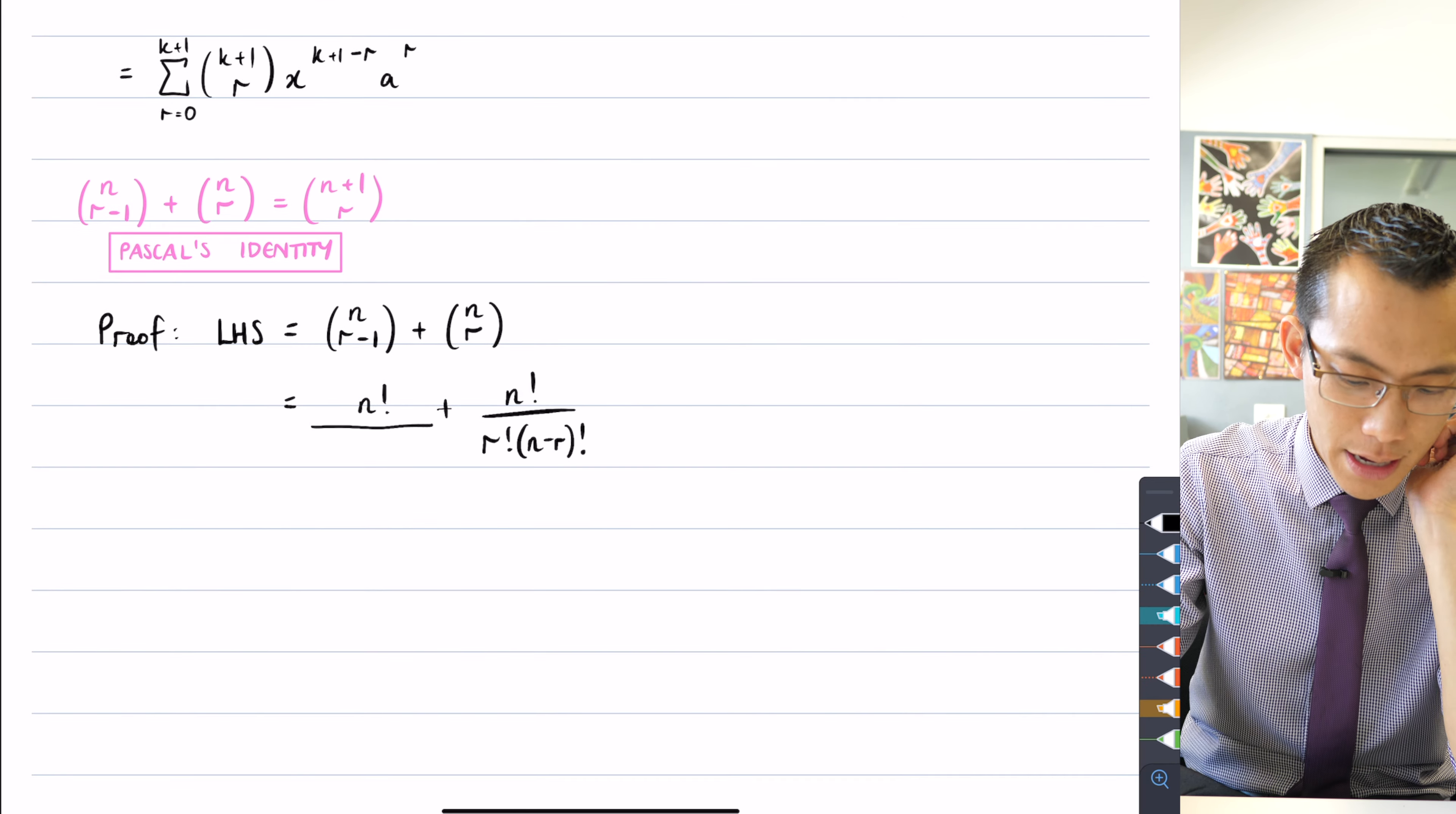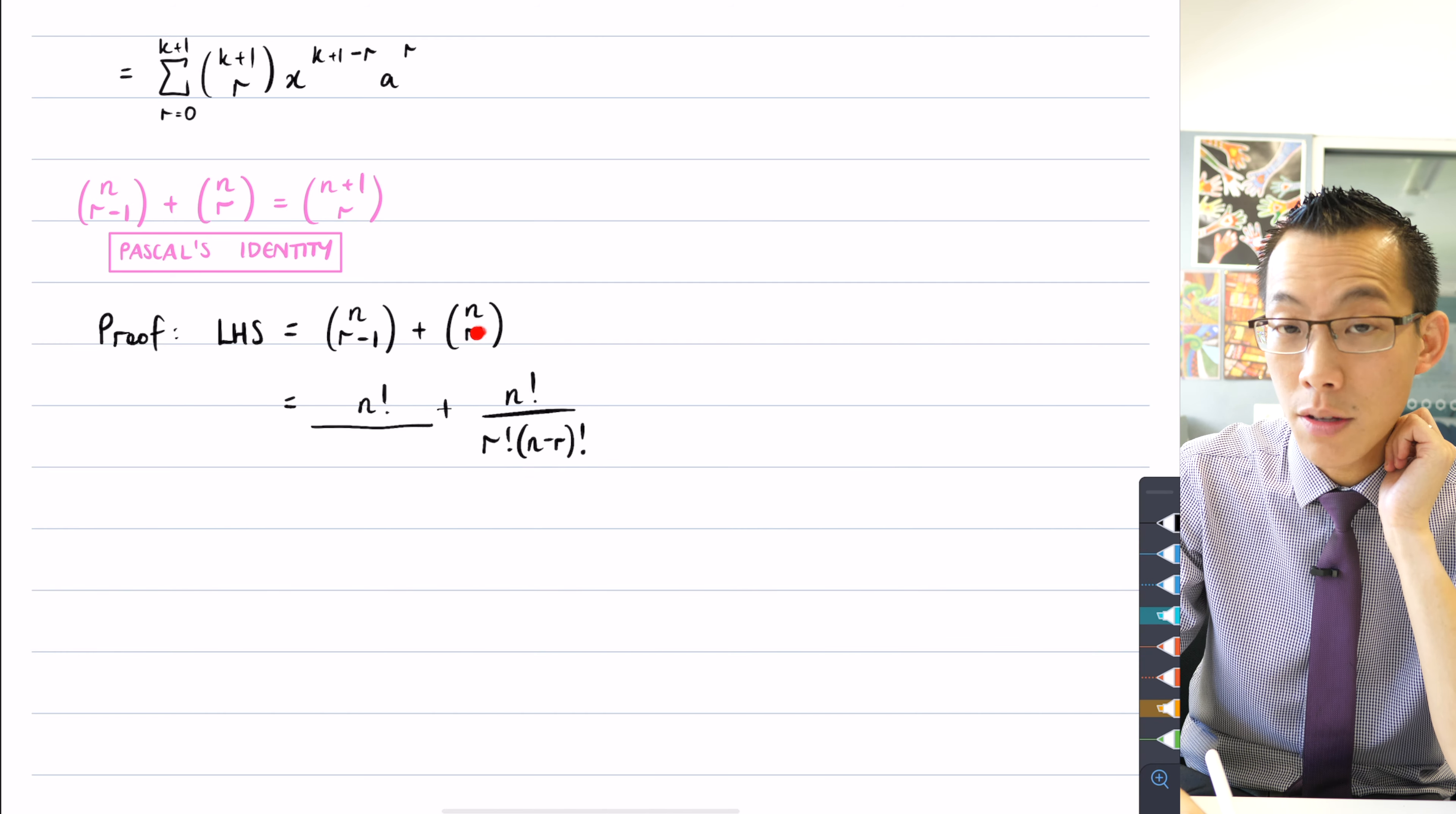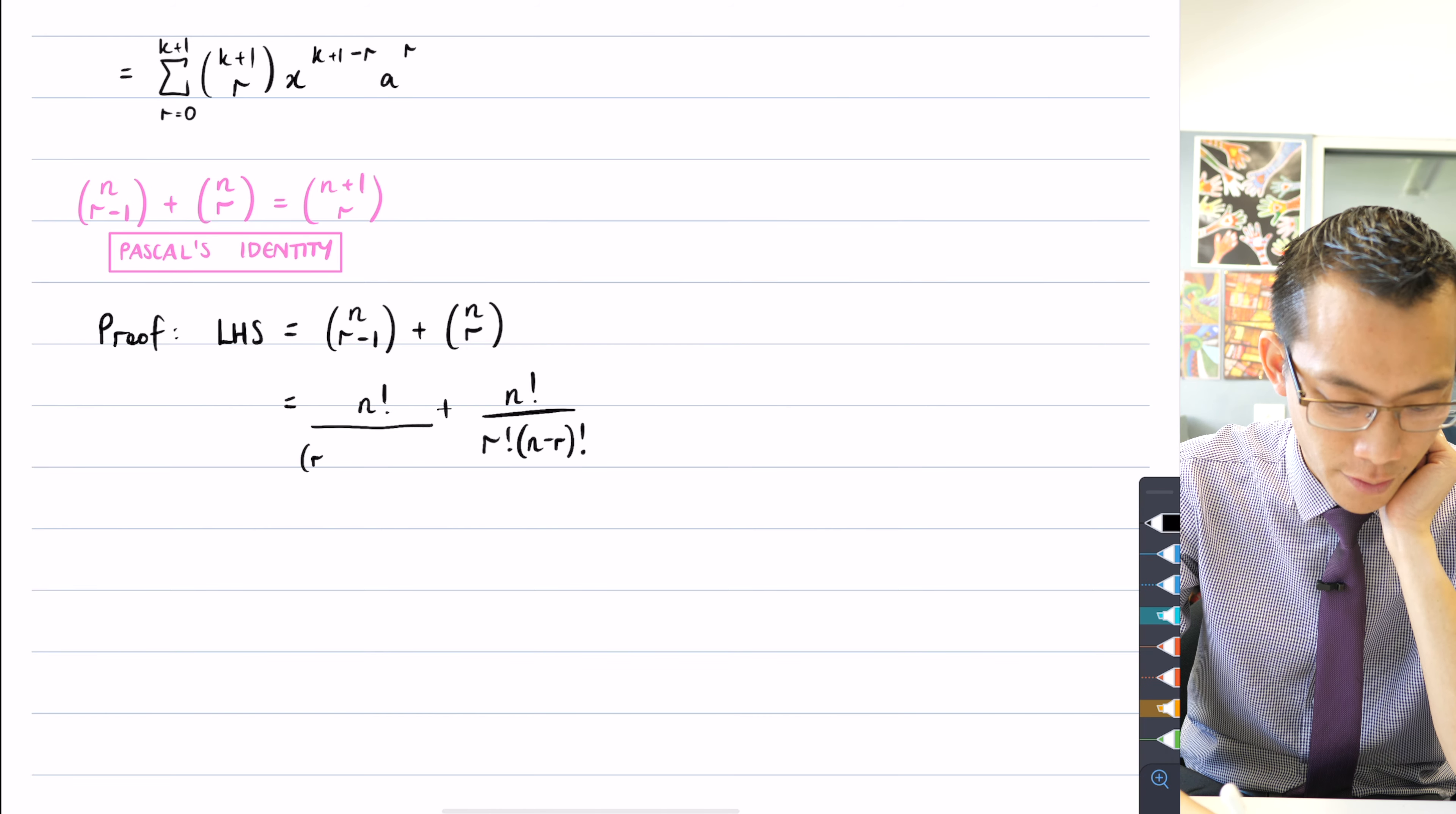Well, you can see from this right-hand term here, it's the r factorial. So it's whatever's on the bottom here, factorial. I can do that here. It's an r minus one factorial.